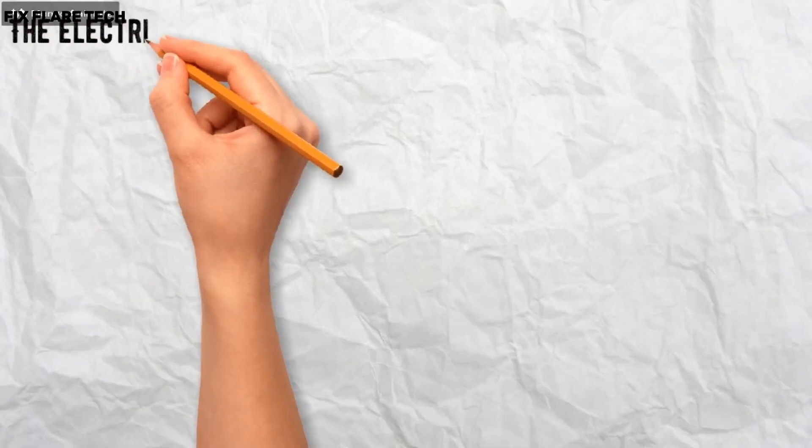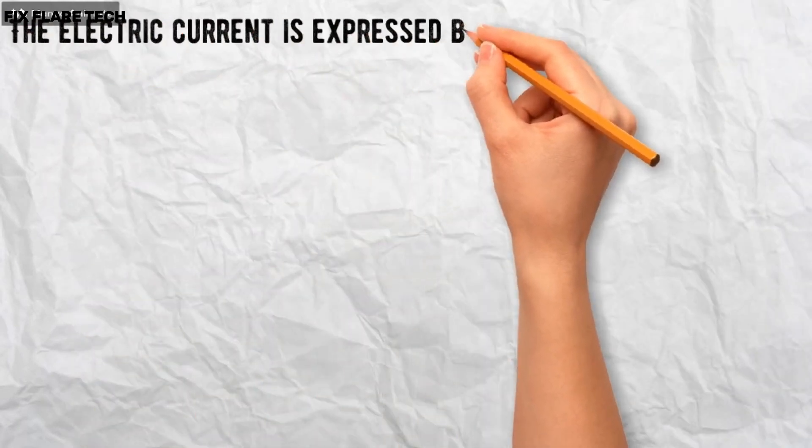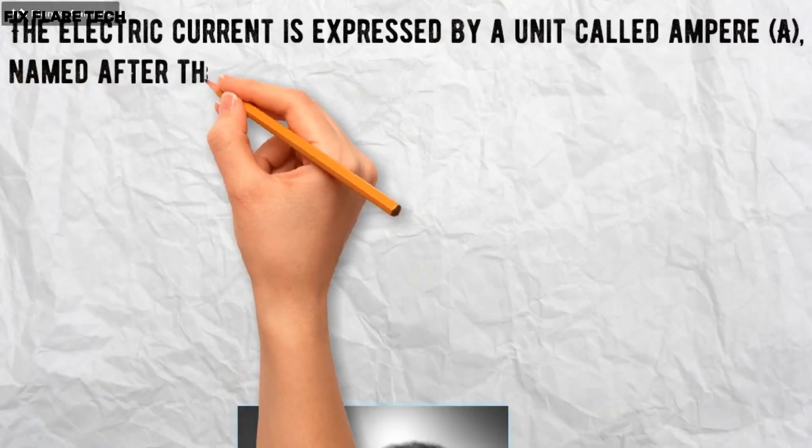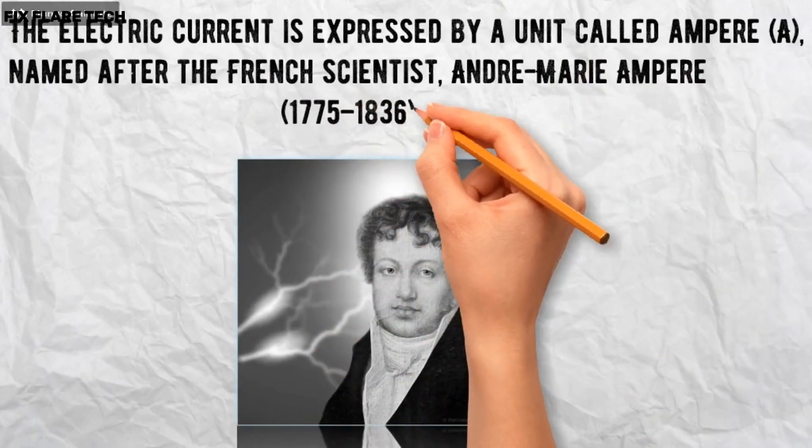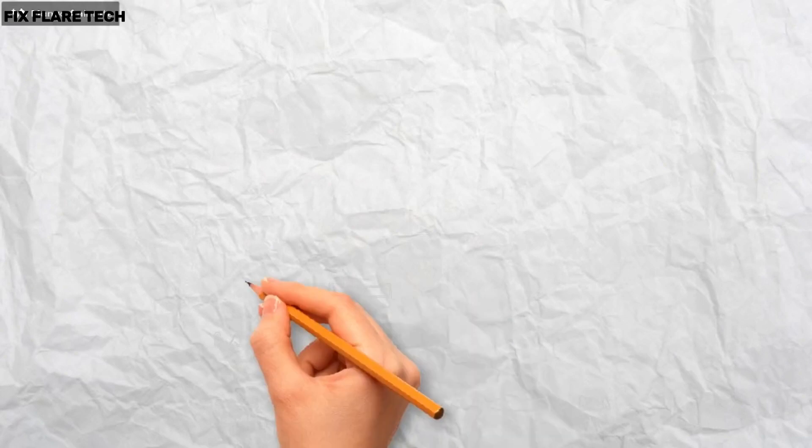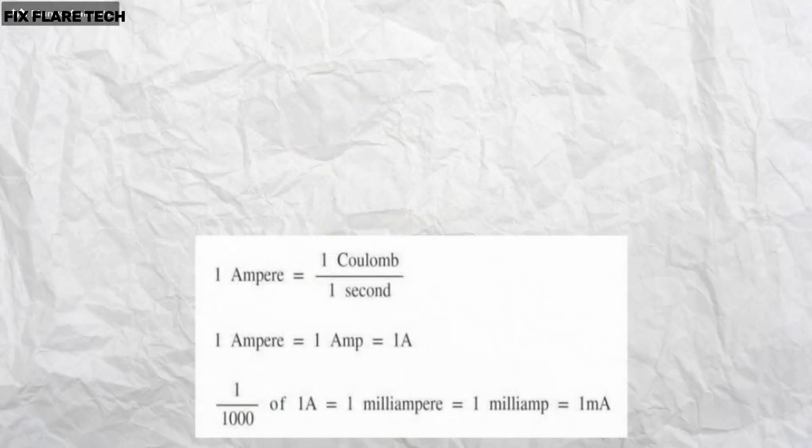The electric current is expressed by a unit called Ampere (A), named after the French scientist André-Marie Ampere, 1775 to 1836. 1 Ampere is constituted by the flow of 1 Coulomb of charge per second, that is, 1 A = 1 C/1 S.